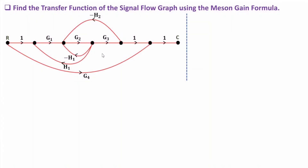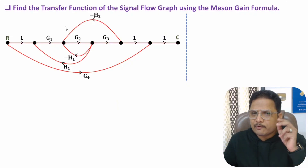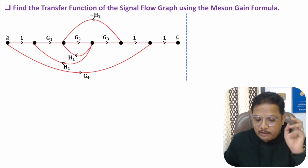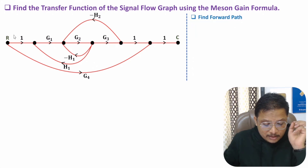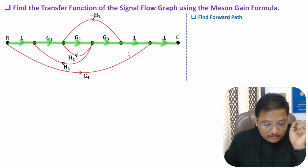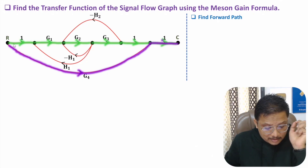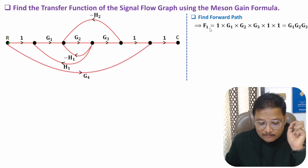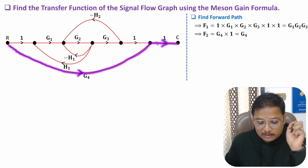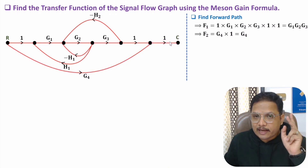Now I will explain the second problem. Again, we follow the same steps to identify output C divided by input R. First, identify forward paths. In the forward paths, we have a first forward path: 1·G1·G2·G3·1·1, and a second forward path: G4·1.